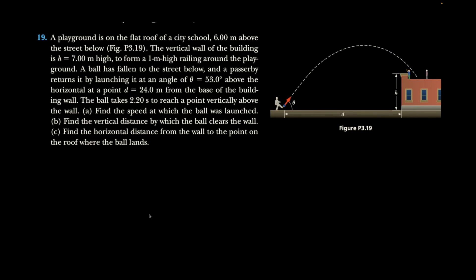Question number 19. Now this is a doozy. So we have a ball that is launched at 53 degrees to the horizontal. We do not know the initial velocity. We need to find it. That's question A that we need to answer.